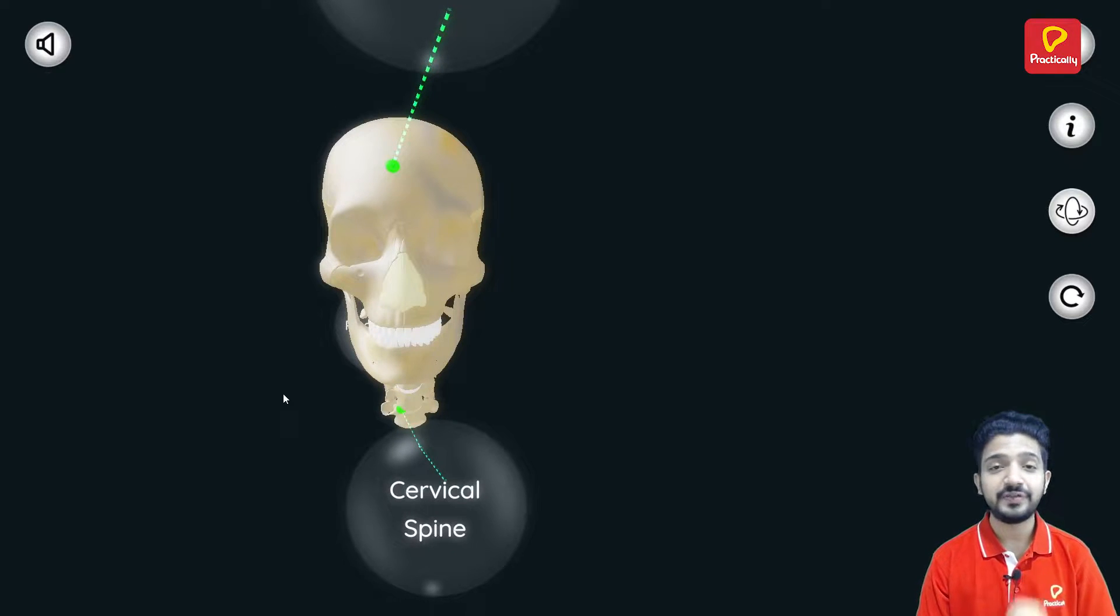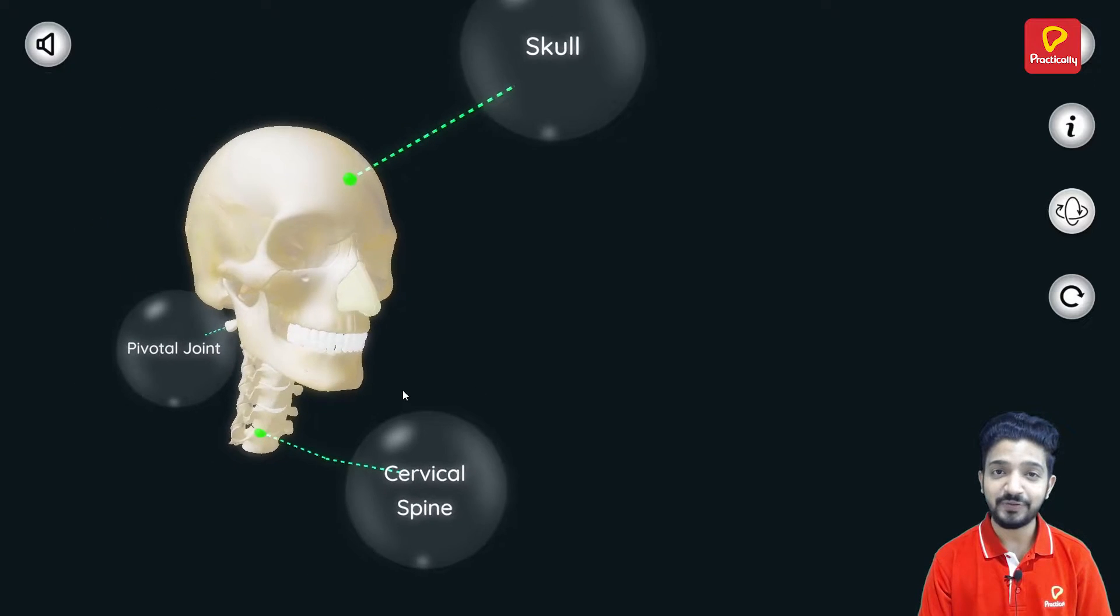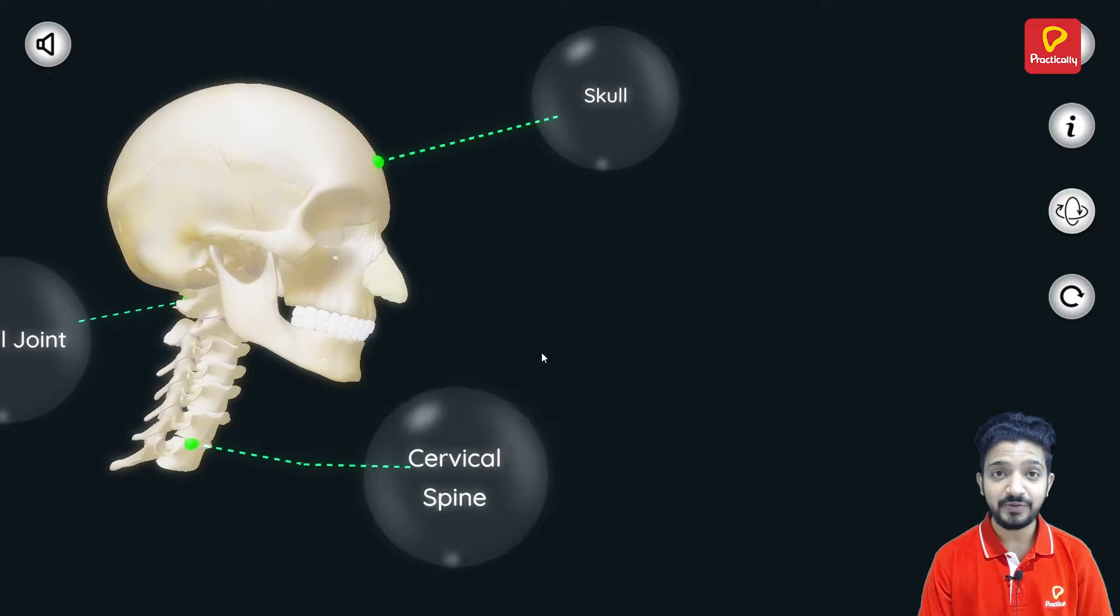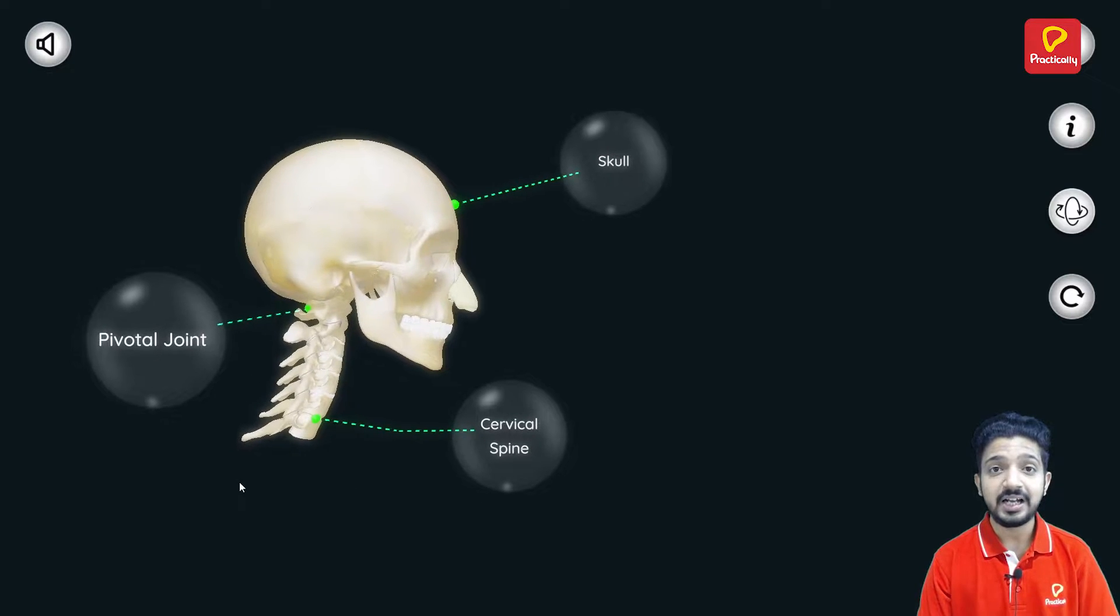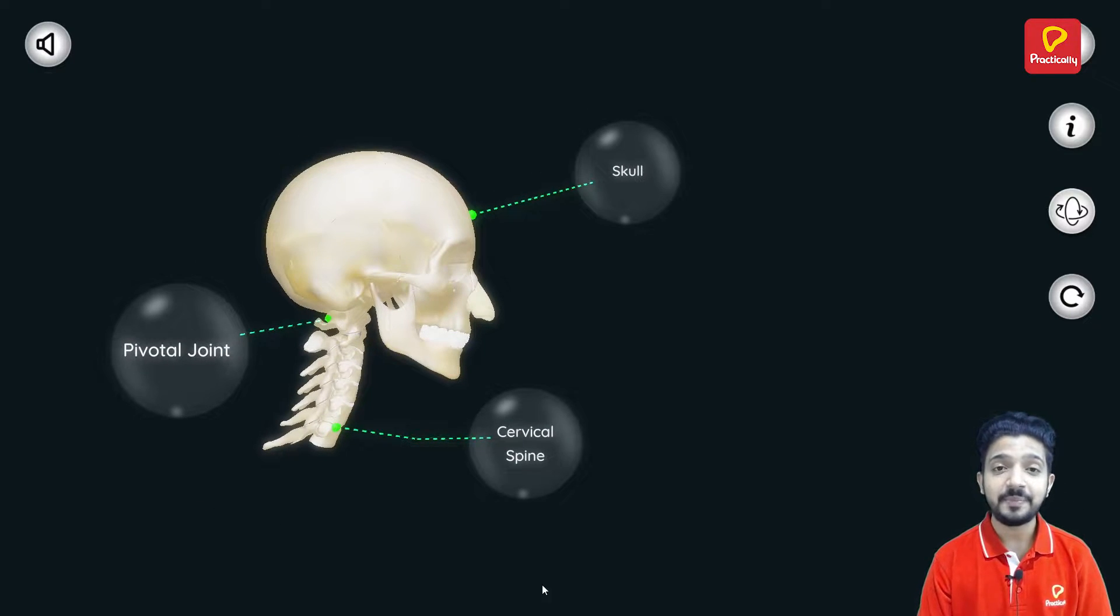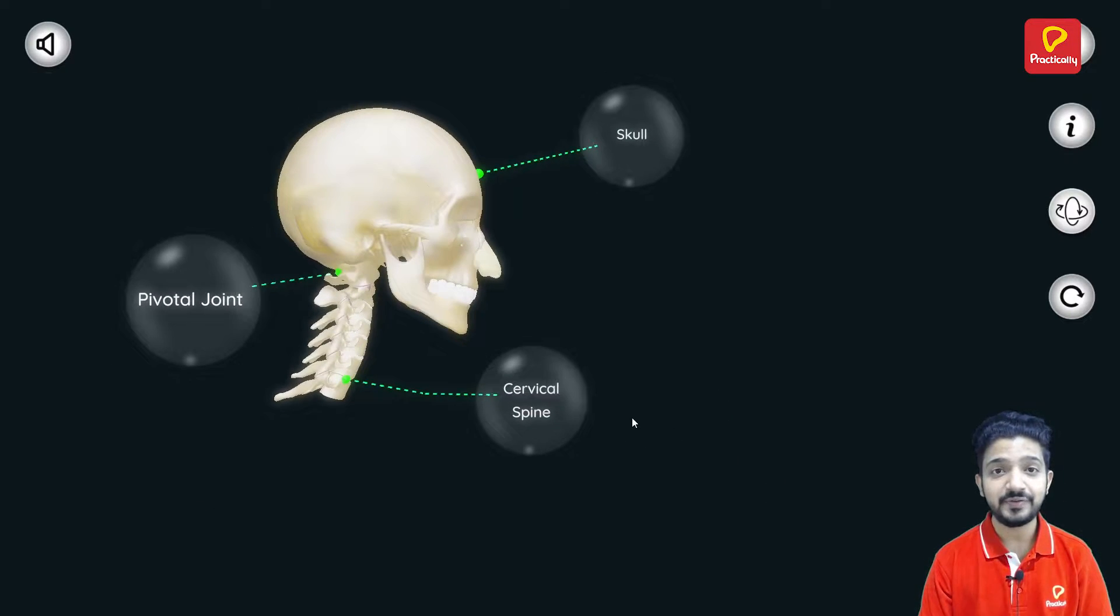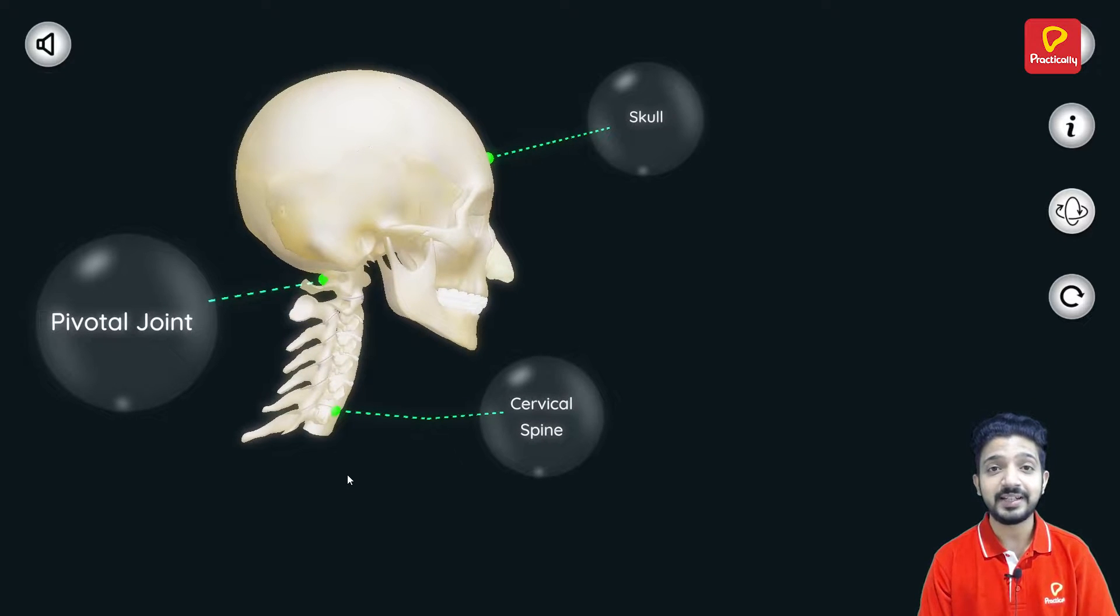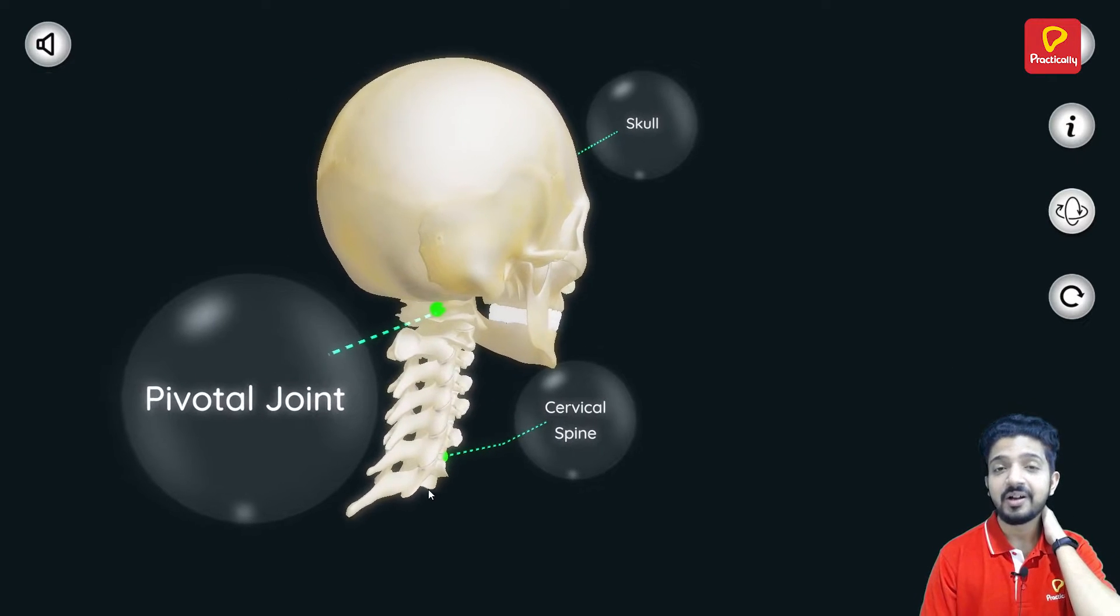Today we are going to study four different types of joints. Let's begin with the first one, that is the pivotal joint. In this type of joint, the movement is restricted around a central axis. And the best example of this type of joint is the joint between the skull and the spinal cord or the cervical spine.